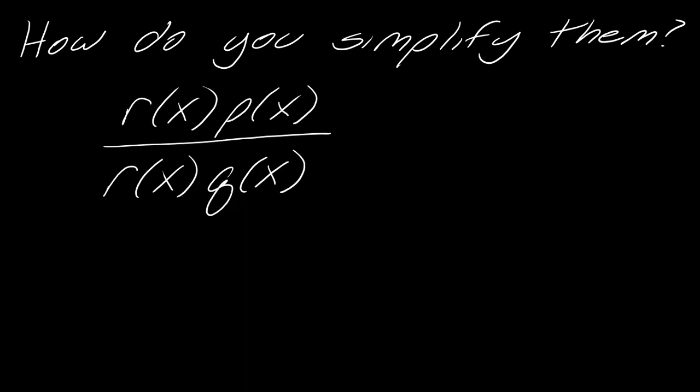So just to show you a theoretical version of what I'm talking about here. Let's say that I have determined that my polynomial can be factored as r(x) times p(x) over r(x) times q(x). So I feel like without really telling you, if I just asked you to simplify this, you would just look at this and say, oh well, just cancel out those r(x)s, right? And then I'd be left with p(x) over q(x). That's basically the idea behind this.